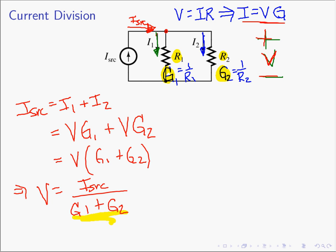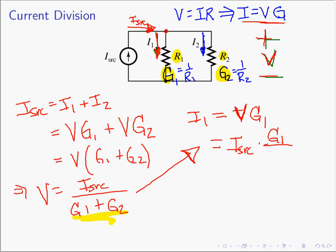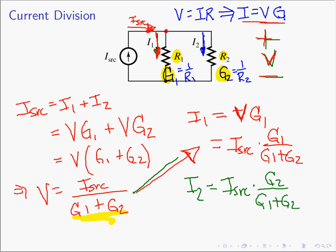Now that we know V, we can find I1 and I2. I1 equals V times G1, and substituting V equals I source over (G1 plus G2), we get: I1 equals I source times G1 over (G1 plus G2). Likewise, I2 equals I source times G2 over (G1 plus G2).